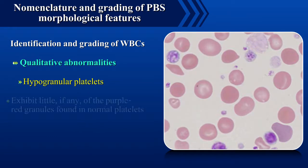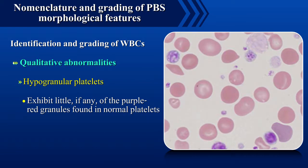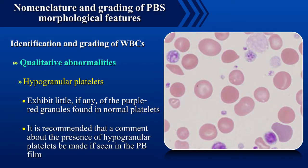Hypogranular platelets exhibit little, if any, of the purple-red granules found in normal platelets. It is recommended that a comment about the presence of hypogranular platelets be made if seen in the peripheral blood film.